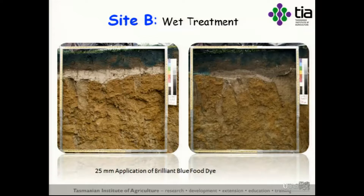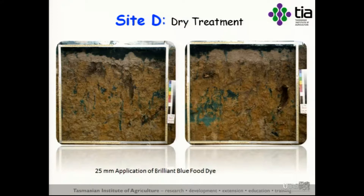That same soil, five metres away, once I wet the soil up and then applied the same amount of dye, the dye didn't even infiltrate into the A2. The clay columns have gone — they've shrunk, swelled up and disappeared. We've got unstable flow, an unstable wetting front in the A horizon. A few things going on there — where's the dye gone?